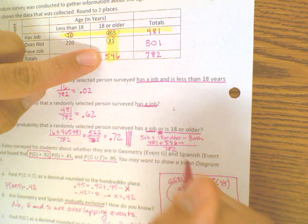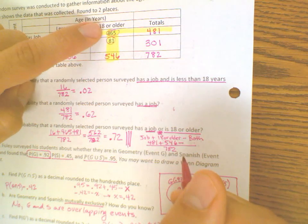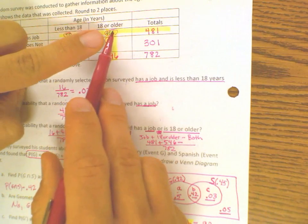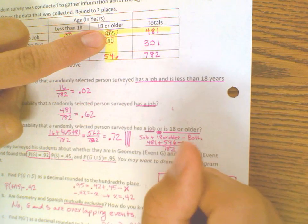And then you're going to subtract the people who you counted twice, or the people who have a job and are 18 or older, which is 465.